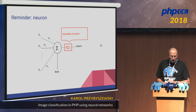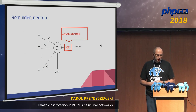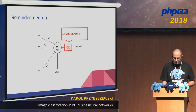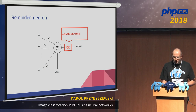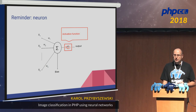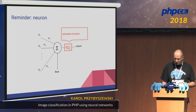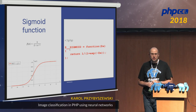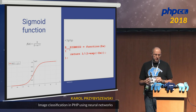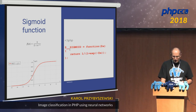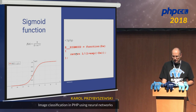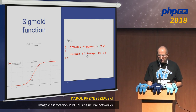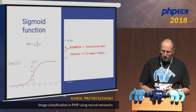Quick reminder about neurons: neurons have a number of inputs, a number of weights, they have the bias, they have the dot product where you add all the signals, and they have the activation function. We'll go slightly deeper into the activation function. This is an example called the sigmoid function — there can be various activation functions, this is just one example. In PHP it's really easy: you just assign the function to a variable, returning 1 divided by 1 plus exp of minus x.